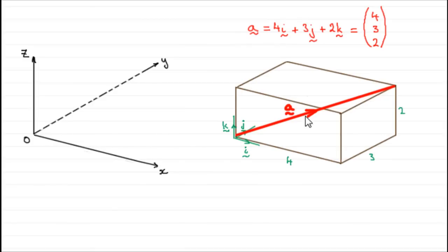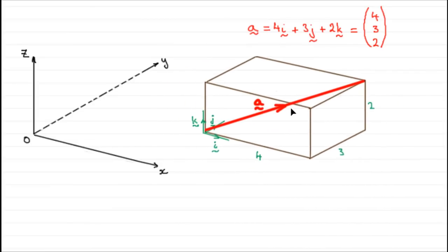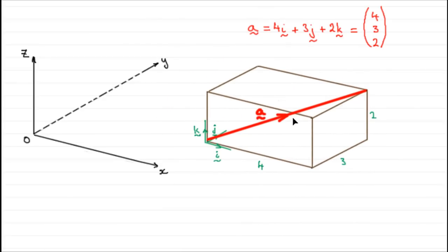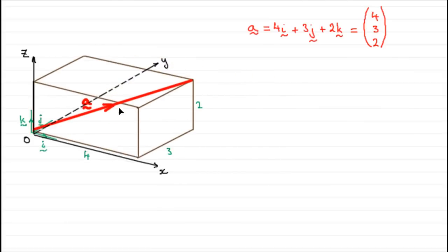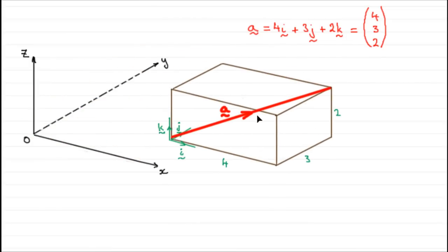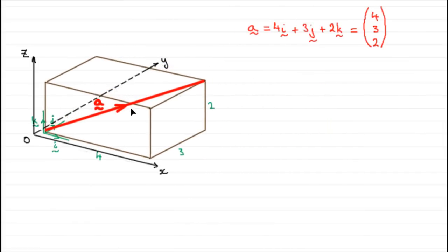We had the displacement vector a between two points in space. It wouldn't matter where those two points were — as long as this vector a is 4, 3, 2, the magnitude is going to stay exactly the same, the length of this vector. It doesn't matter if it's a position vector starting at the origin or a displacement vector anywhere in space. We'll just move it over here and remove these axes; it doesn't matter where those axes are.